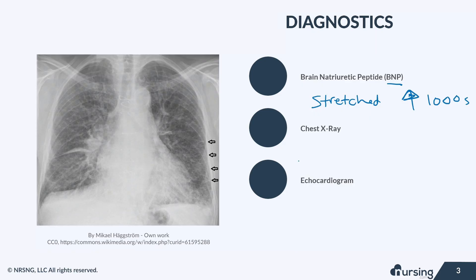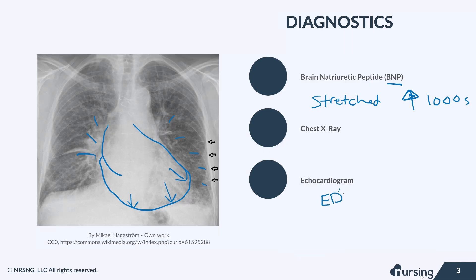We'll also do a chest x-ray, which could show a couple of things. You may see that the heart is actually enlarged because of the overload and that stretch in the ventricles pushing out and making the muscles dilate. You may also see fluid in the lungs — that's the pulmonary edema from the congestion. We'll also get an echocardiogram, which shows end diastolic volumes — that measures preload — and ejection fraction, which in heart failure patients is usually less than 50%. An echo can also reveal any valve disorders.